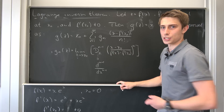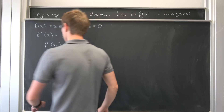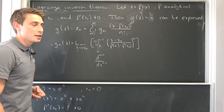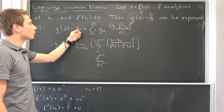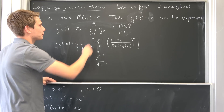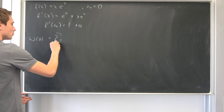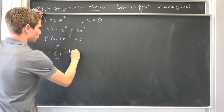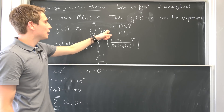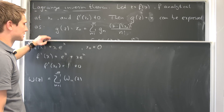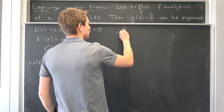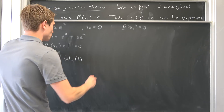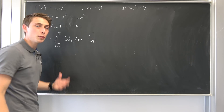Since those conditions are satisfied, we can now write out the Lambert W function of z. We want to express it using the Lagrange inversion formula. Since x₀ = 0, that term vanishes. We have the infinite sum from n equals 1 to infinity of Wₙ times z to the n over n factorial. And what is f of x₀? Plugging zero into x·eˣ gives zero, so f of x₀ is just zero, which simplifies nicely — we just have z to the nth power over n factorial.